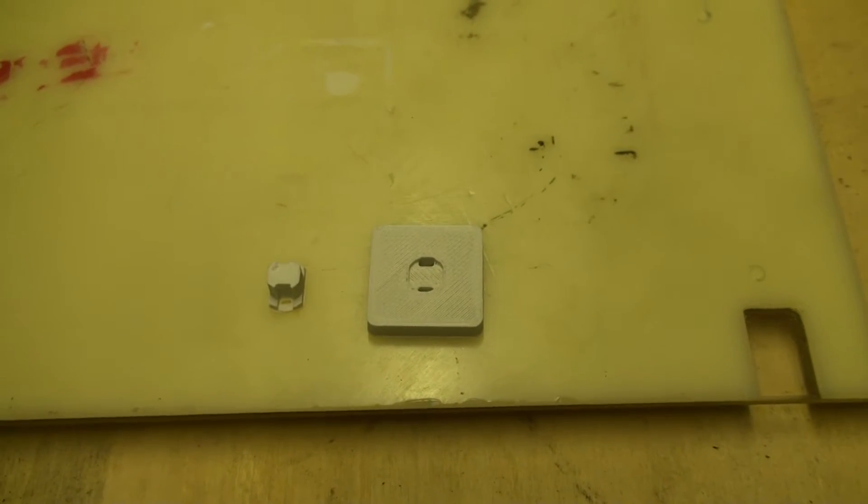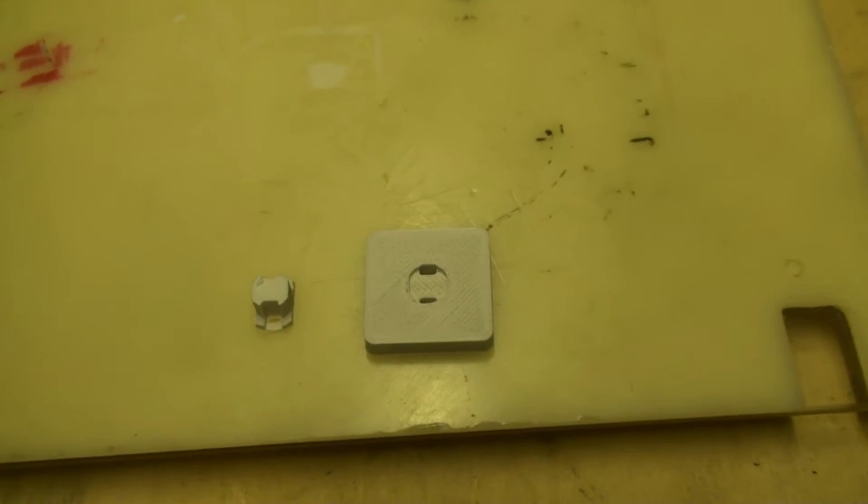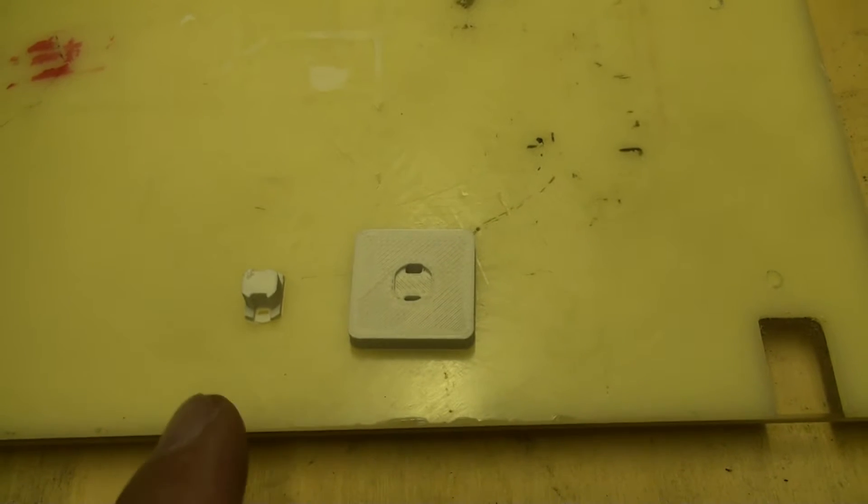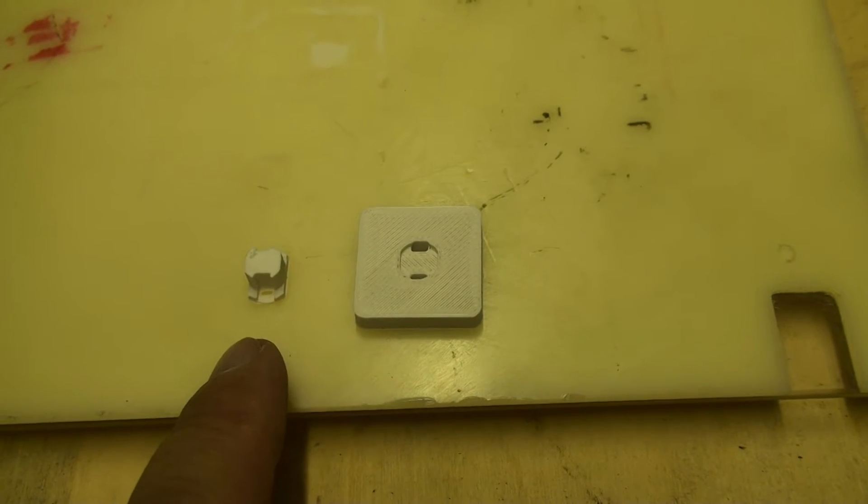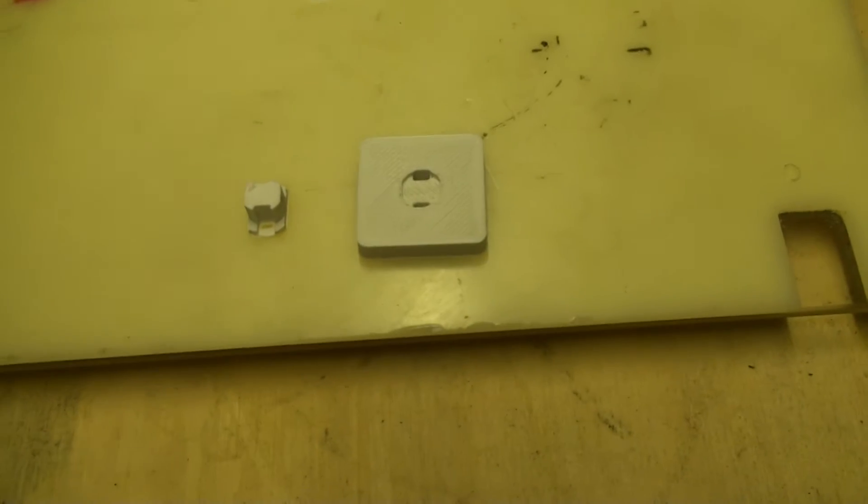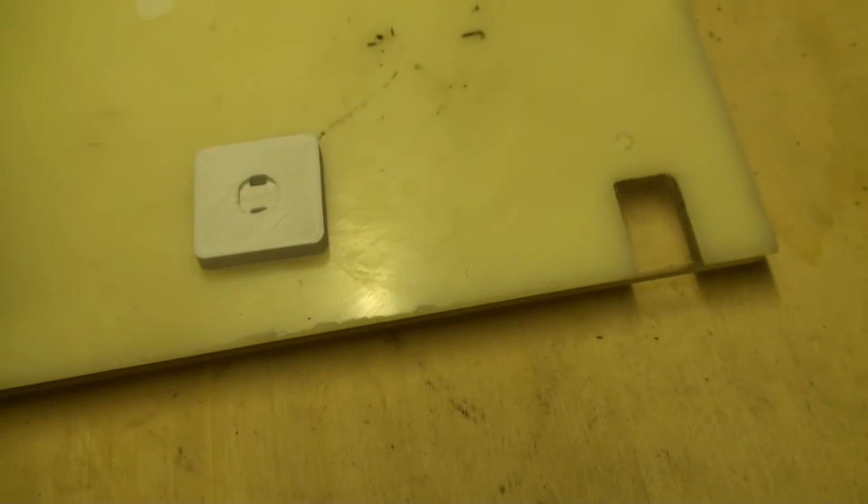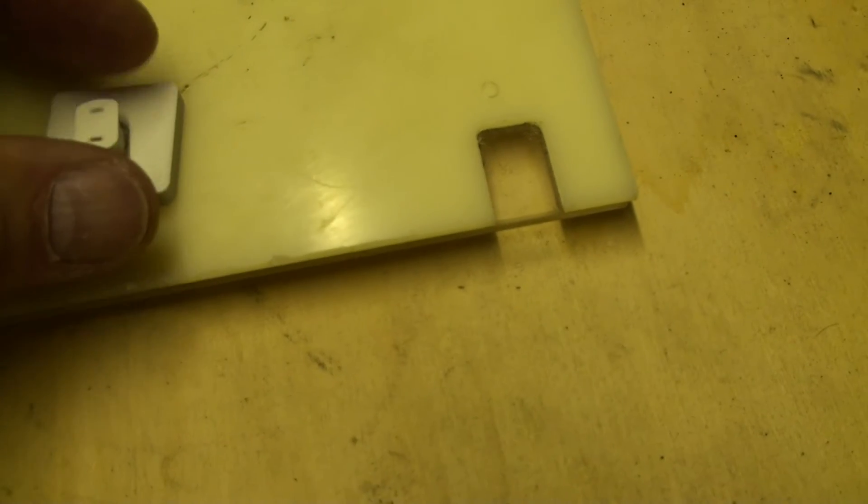Here you can see the two printed parts: the base part and the bayonet part. You glue these two parts together.